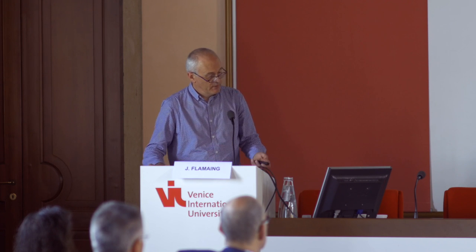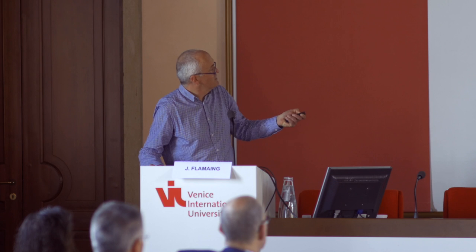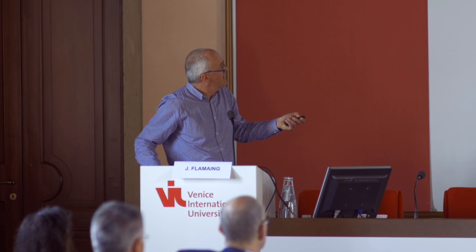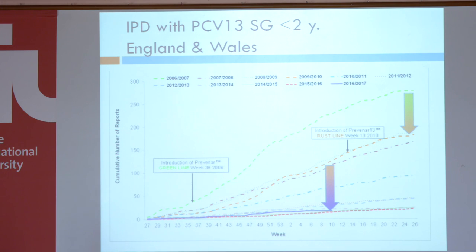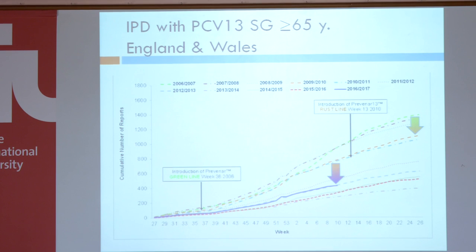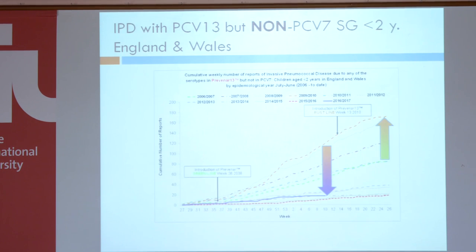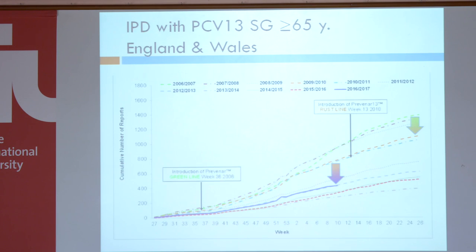By enlarging the coverage of the vaccine to the 13-valent conjugate vaccine, even more invasive pneumococcal disease by those vaccine serotypes was prevented in children. The same you see in the older population — the drop with the 7-valent vaccine and then with the 13-valent vaccine. Also there, proof of that herd protection effect.